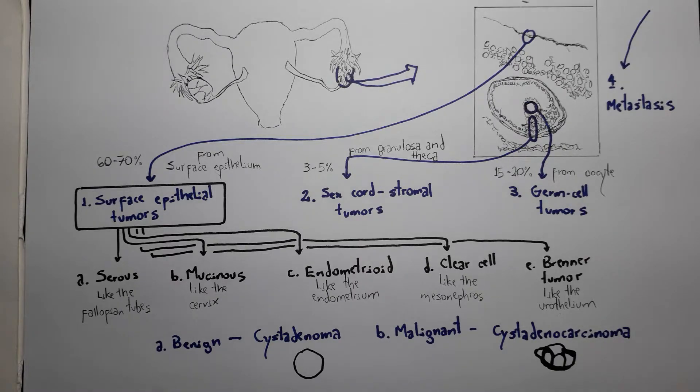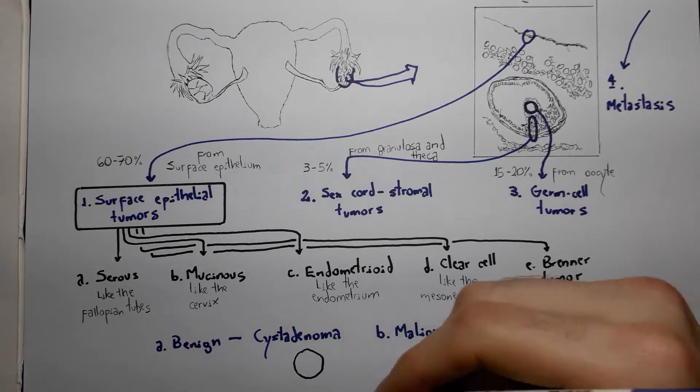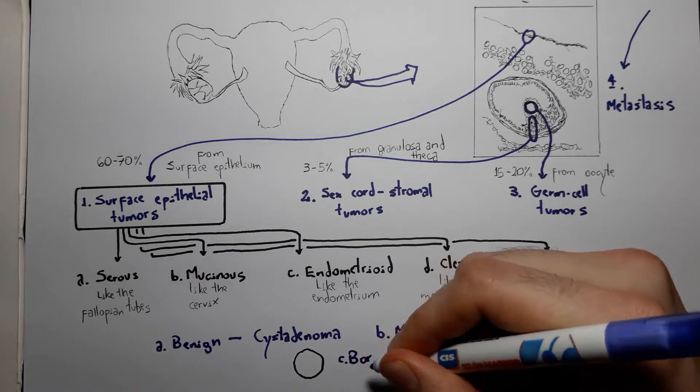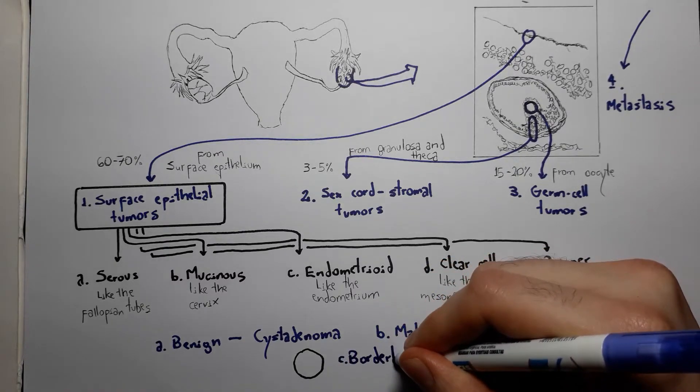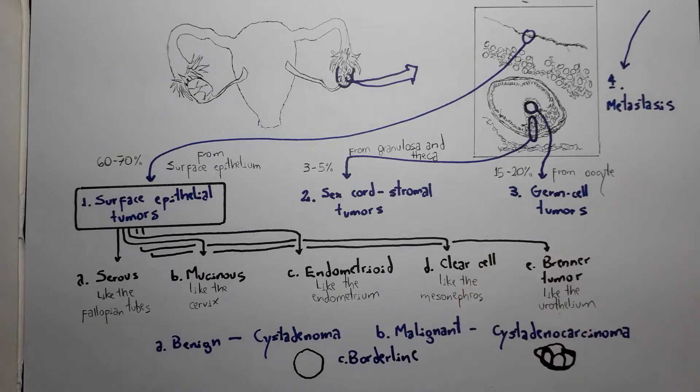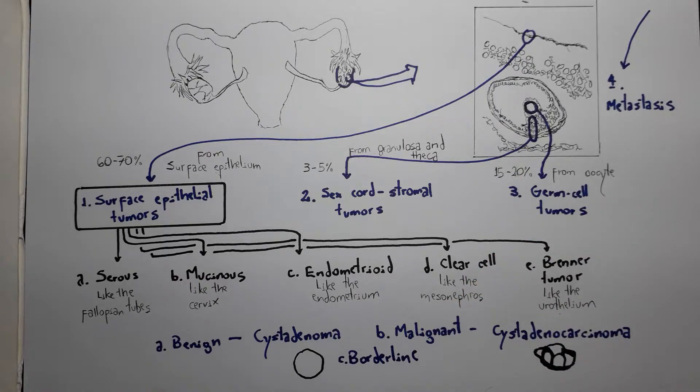Just like in breast tumors, benign ones are more common in premenopausal women, while malignant ones are more common in postmenopausal women. The tumor can also be borderline, which means it's not as malignant as a malignant tumor but has a worse prognosis than a benign tumor.